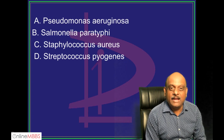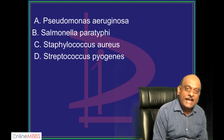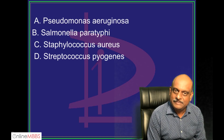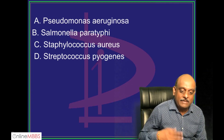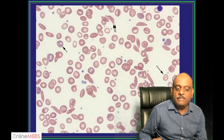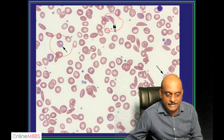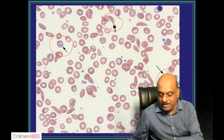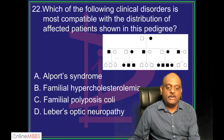When we run free classes, 120–140 students attend online live. But paid students — only around 20 are seen coming. The answer is Salmonella — absolutely. It is a sickle cell anemia case. What are these cells called? Sickle cells, and these are target cells, typically seen in sickle cell anemia. You find Salmonella leading to this finding.